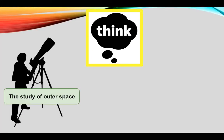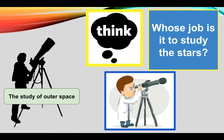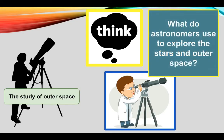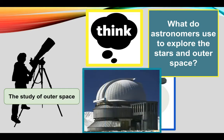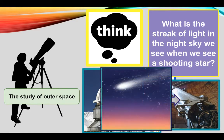The study of outer space is called astronomy. An astronomer's job is to study the stars. Astronomers use observatories and telescopes to explore the stars and outer space. The streak of light in the night sky we see during a shooting star is called a meteor.